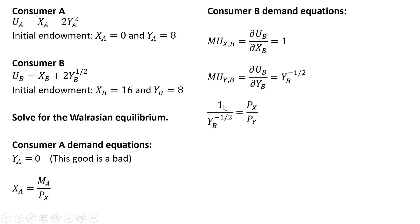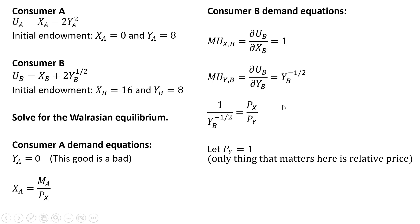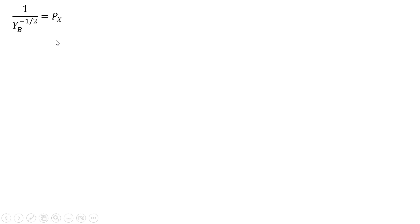Forming the marginal rate of substitution, which is the marginal utility of good X divided by the marginal utility of good Y, we have the following. We're going to normalize the price of good Y equal to 1 — only the relative price matters. Setting the price of good Y equal to 1 and solving this equation for good Y — moving Y into the numerator and then squaring both sides — this will be consumer B's demand for good Y.